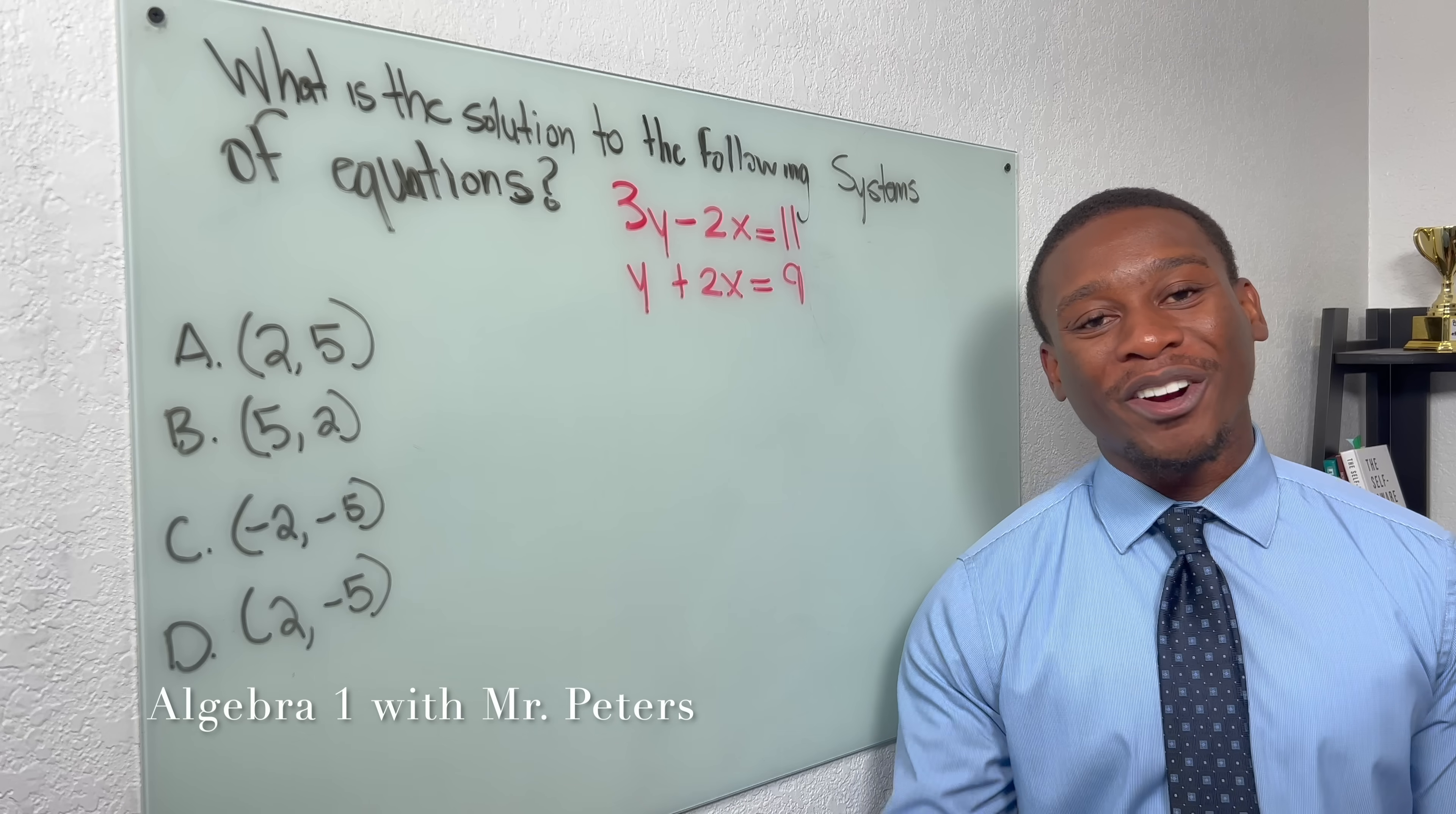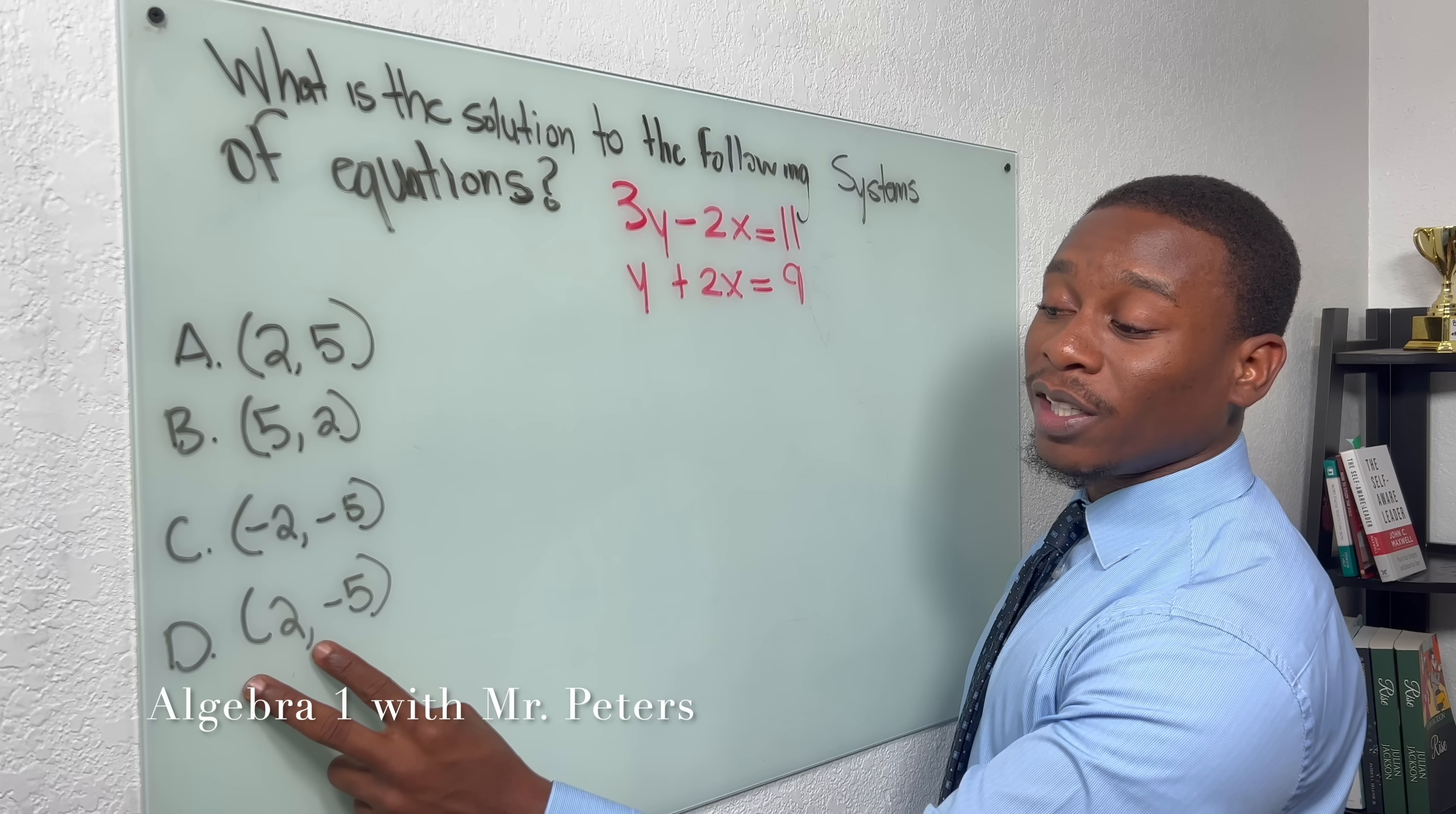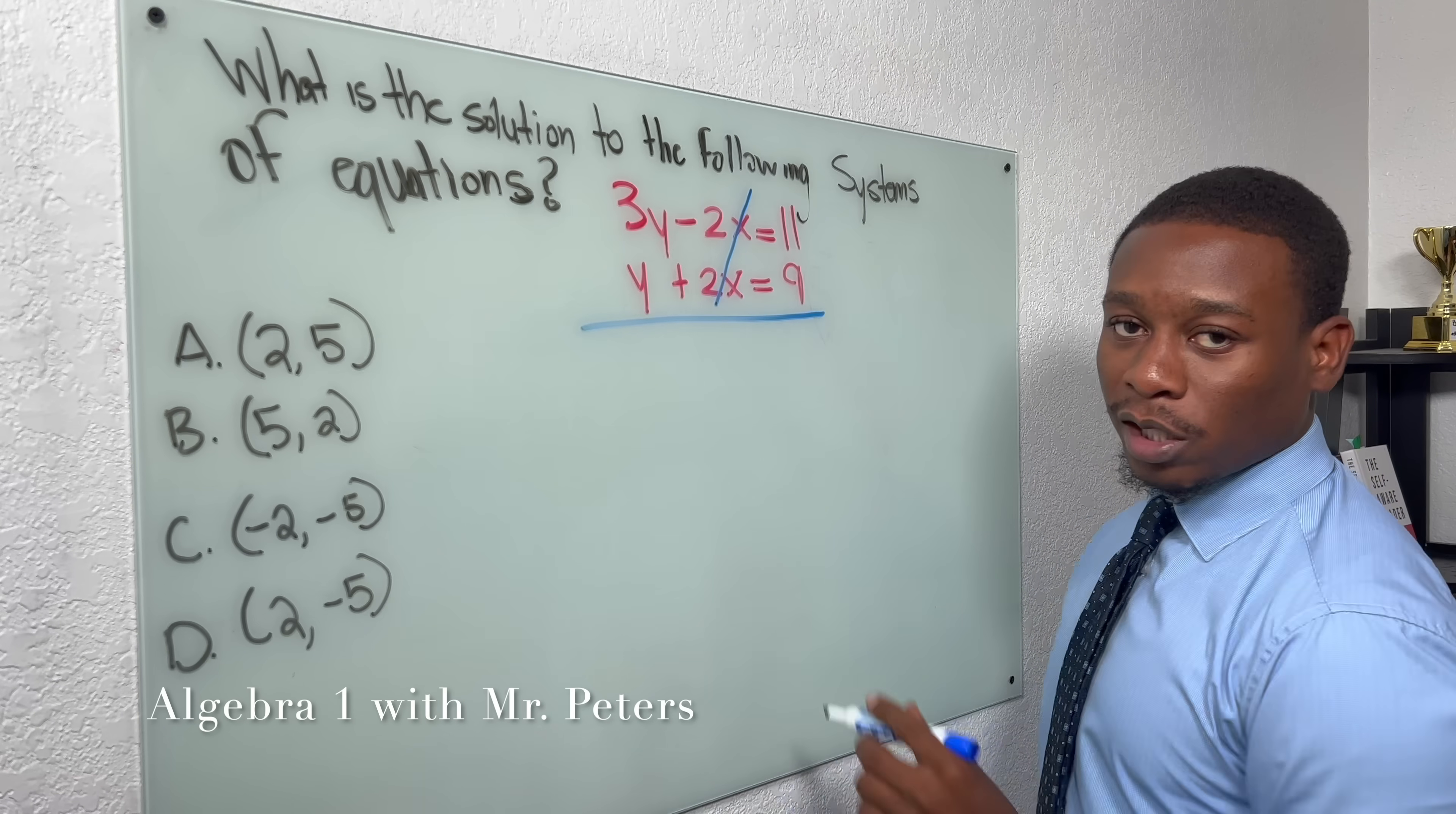So we're on the final problem of our EOC review today. And like I said, hope you guys have been enjoying this problem. So they're asking us for the solution. And I just want you guys to see how they switch the variables around. Please make sure you guys pay attention so you don't confuse your coordinates for your x and y in the answer. So when we're here, guys, rule number one, if the variables are already lined up, don't manipulate it or change things around. We're going to just eliminate x because that's the easiest step for us.